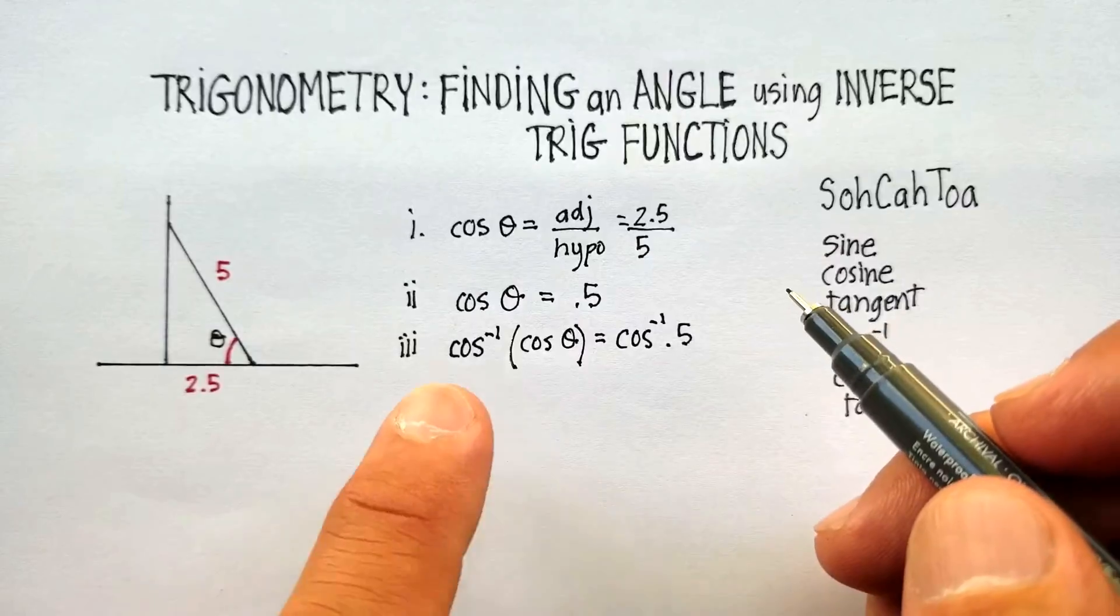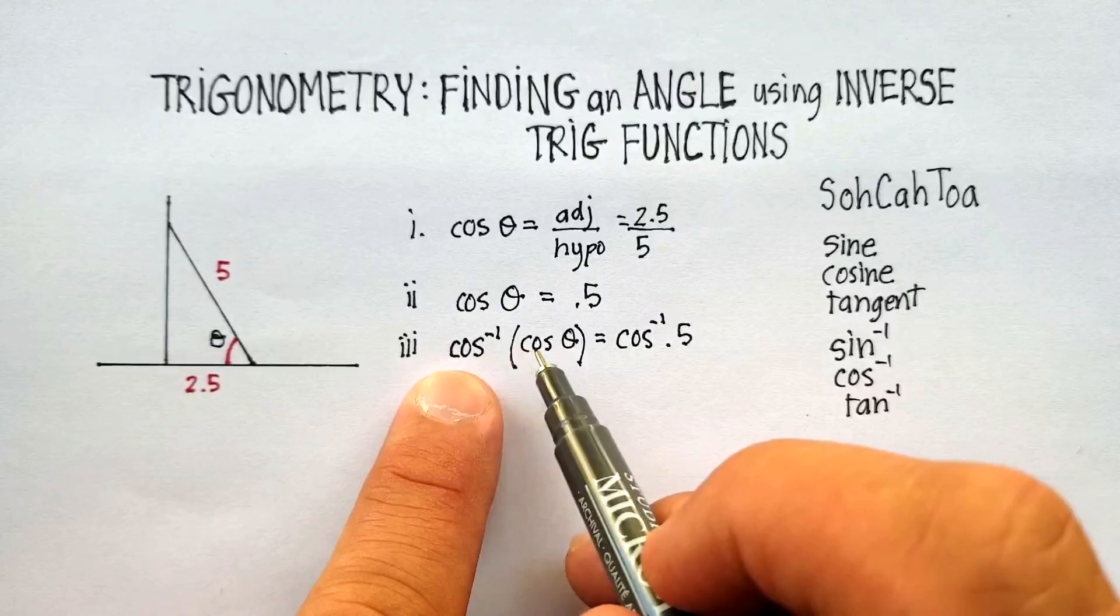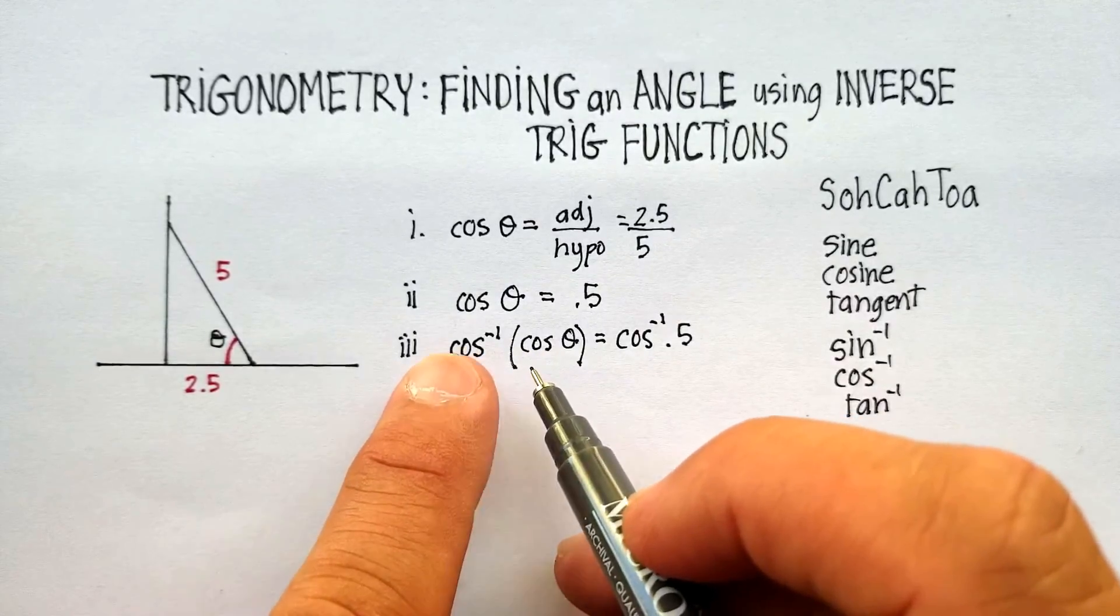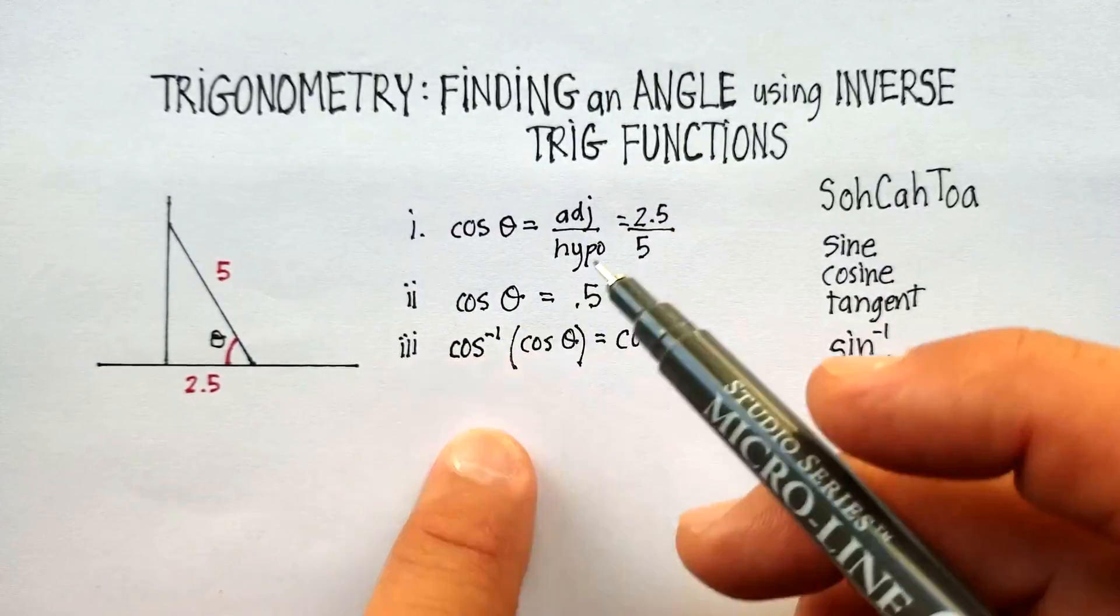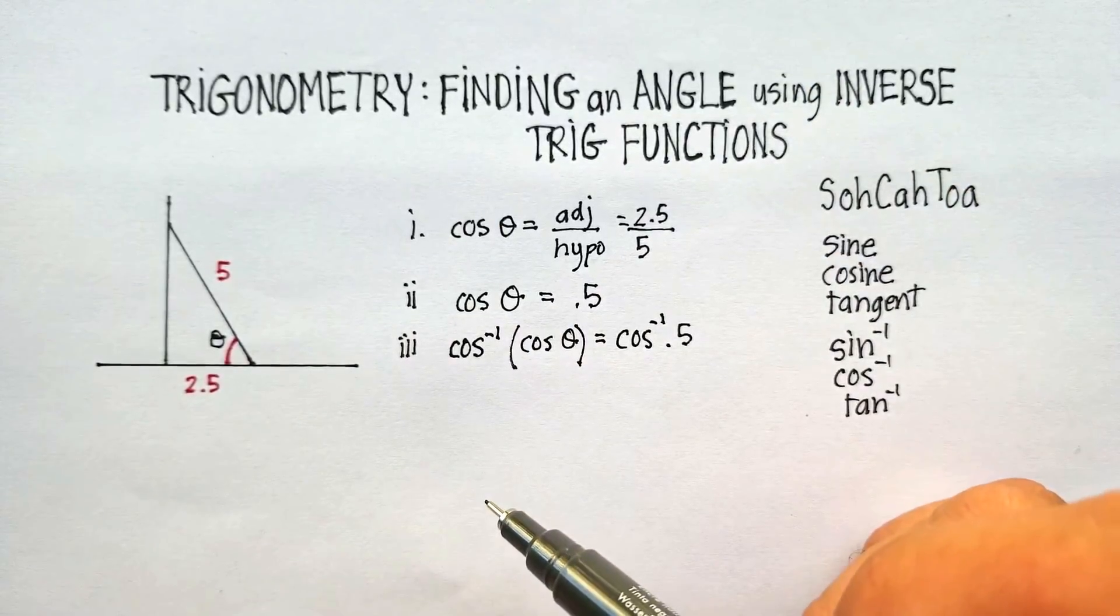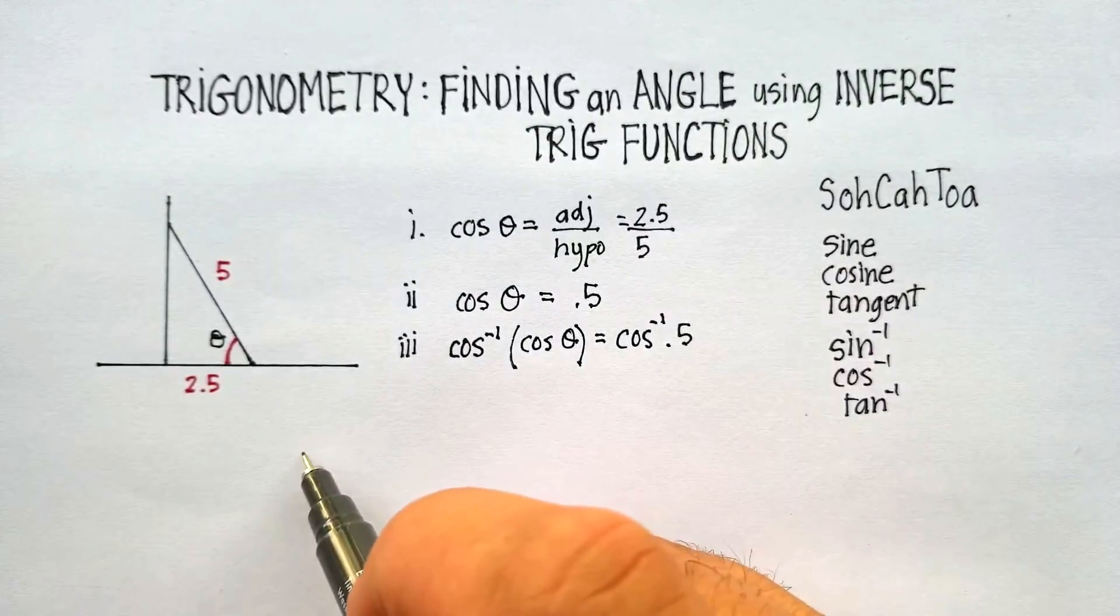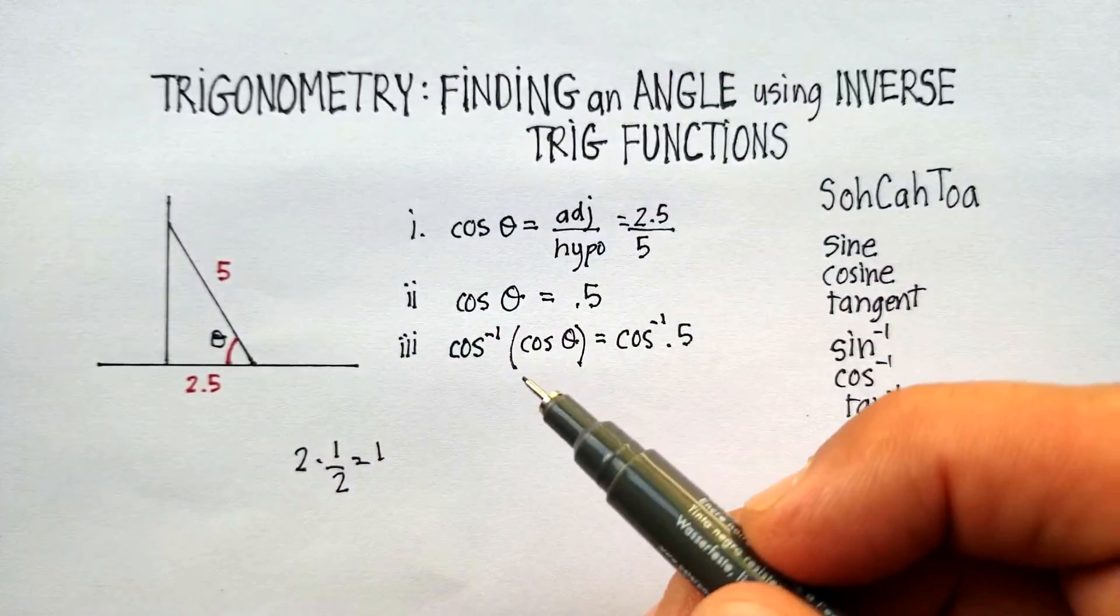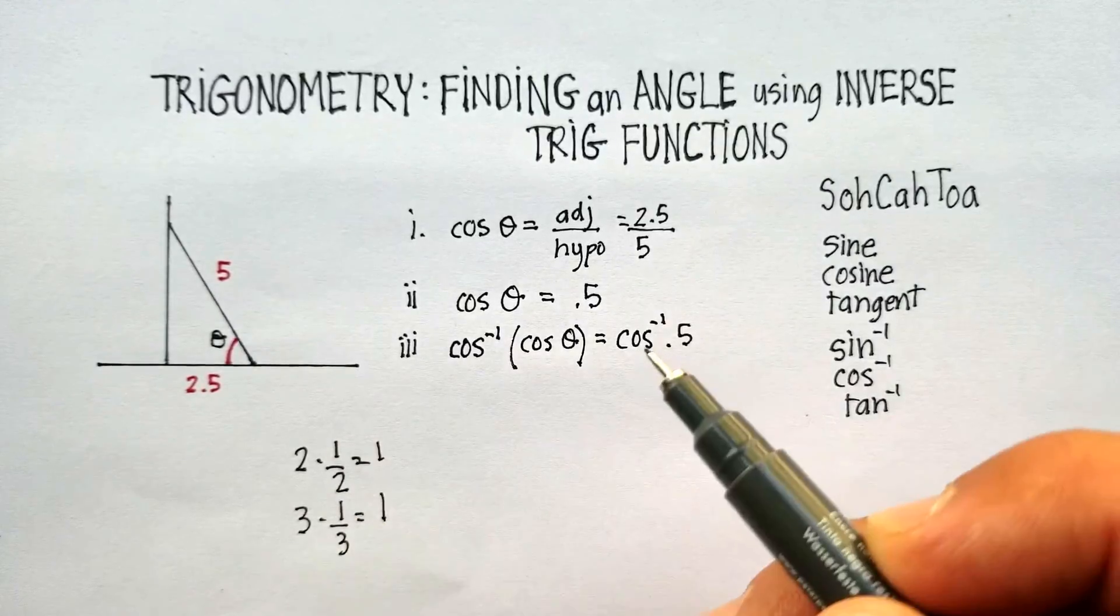Now, remember what inverse means. When you multiply something, like cosine times the inverse cosine, it's like saying 2 times 1 half. It's like putting this over 1. So basically, that divided by half, for example, 2 times 1 half. This is like multiplying an inverse, right? Always turns out to be 1. It doesn't really make any difference what it would be. 3 over 3 is 1, right?